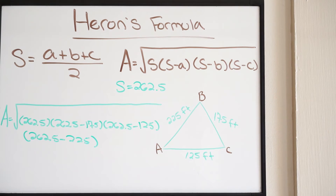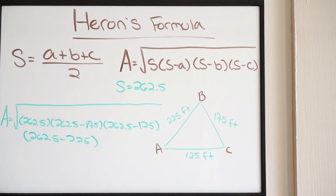We're going to go ahead and plug this all into our calculator. So plugging this in, we get the square root of 262.5 times (262.5 minus 175) times (262.5 minus 125) times (262.5 minus 225).